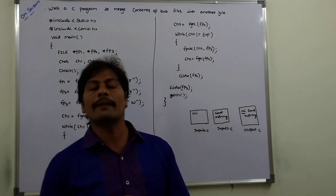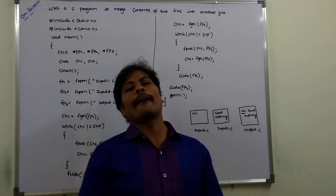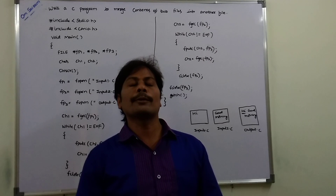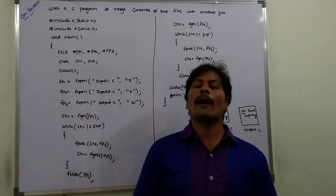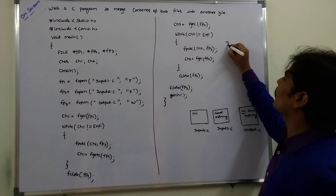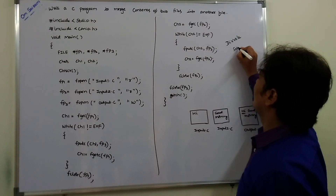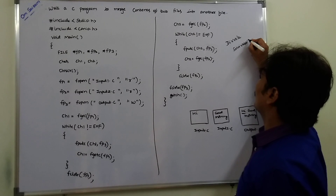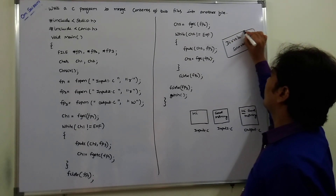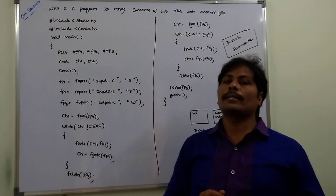This is the program. This is a very important program: write a C program to merge the contents of file 1 and file 2, and that information is written into another file that is output.c. Thank you for watching this video. If you like this video, please subscribe to my channel Deep Bela Srinivas Rao, and please forward to your friends in other colleges also. Thank you.